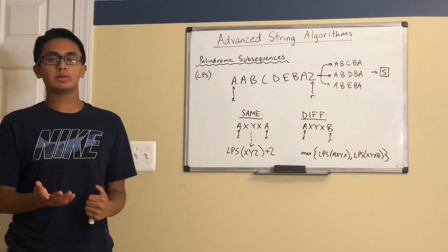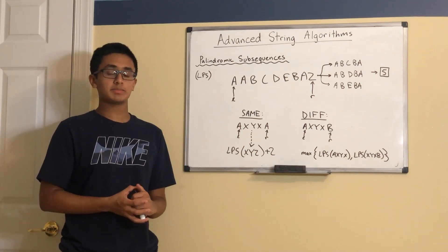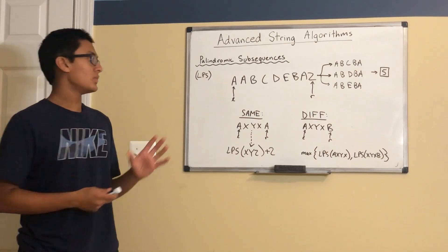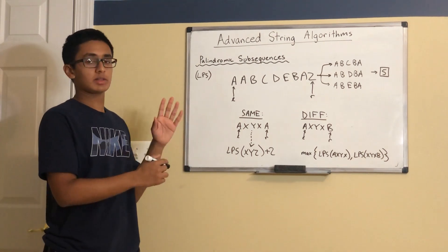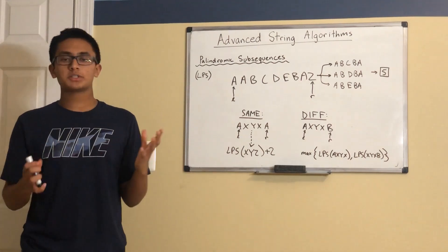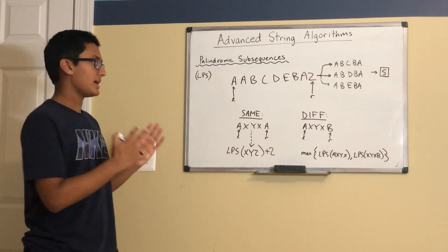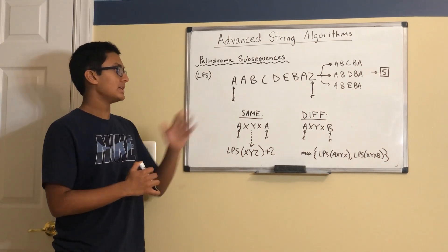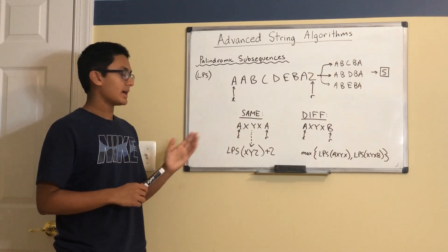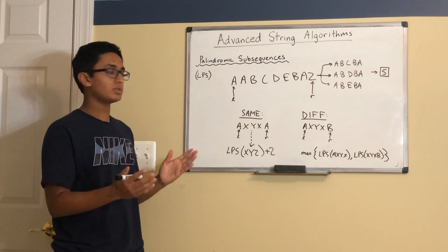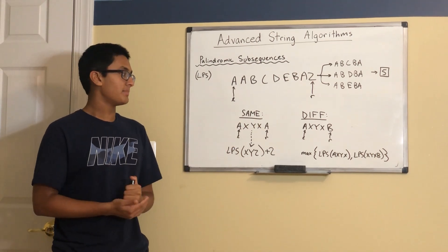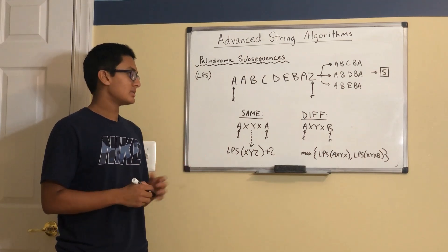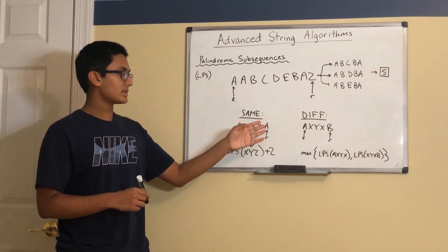The last dynamic programming problem we will consider is the longest palindromic subsequence, also known as LPS. Palindromes are symmetric in nature, so when coming up with a DP solution, we might think about using two different pointers — one on the left side and one on the right side of the string — to determine how many characters will remain after some have been deleted in order to make a palindrome. We perform casework on whether the left pointer is equal to the right pointer. If the two are the same, then our answer is simply the LPS of the inside characters plus two — one for the left pointer and one for the right pointer. However, if the string has different left and right pointers, then our LPS is equivalent to the maximum of the LPS of the string without the first character or without the last character.